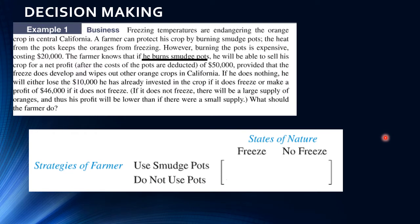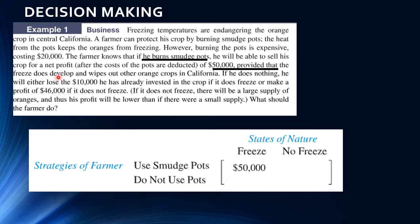Let's look at the first entry. If he burns smudge pots — that's the first row — he will be able to sell his crop for a net profit after costs of $50,000, provided the freeze does develop. So if he burns pots and it does freeze, he earns a profit of $50,000. We've filled in our first matrix entry. Pause now and see if you can figure out how to fill in the other three places.